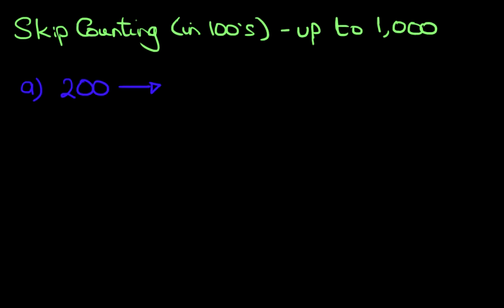200. We've got 200. What number comes after 200 when we are counting in 100s? Well, that is the 100 column. It's a 2. We simply add 1. We're counting in 100s. The answer is 300.